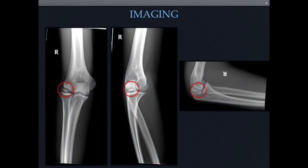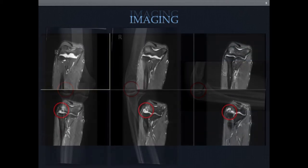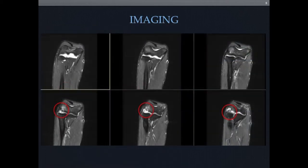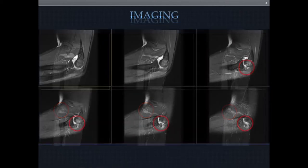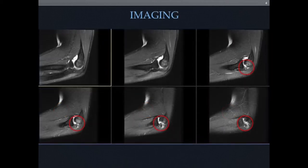X-rays revealed a displaced osteochondral fragment adjacent to the capitellum. An MRI scan confirmed that this is an osteochondritis dissecans lesion of the capitellum that fragmented, became loose, and displaced posteriorly, causing his symptoms.